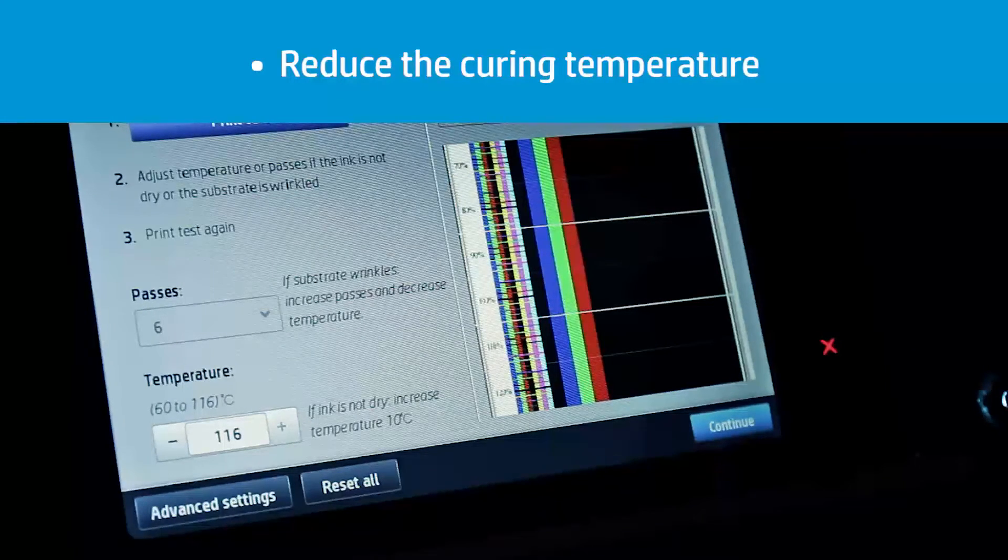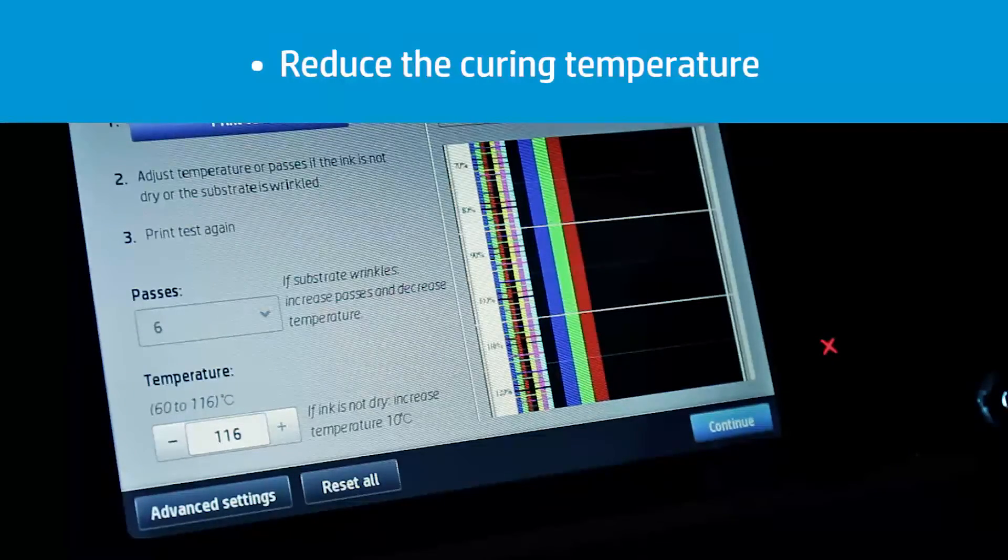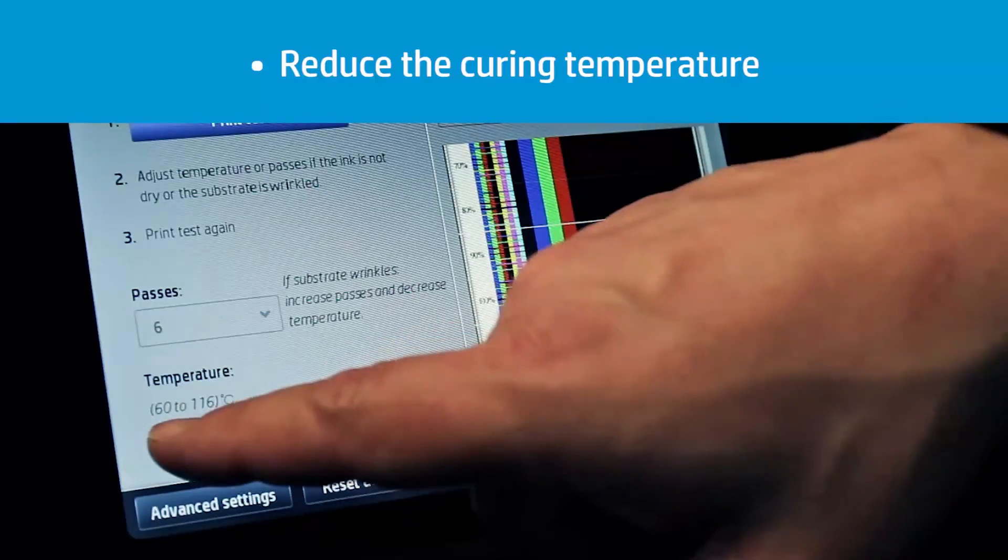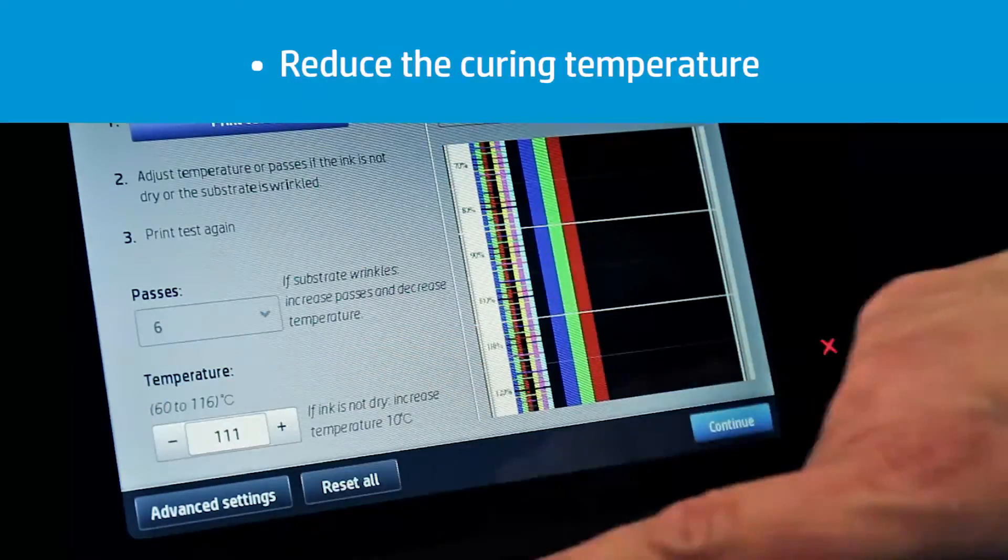If the compensation is not available from your software RIP, or is not a good solution for any reason, then decrease the curing temperature setting in the substrate preset in steps of 5 degrees Celsius, 9 degrees Fahrenheit. Repeat this operation until the deformation is acceptable.